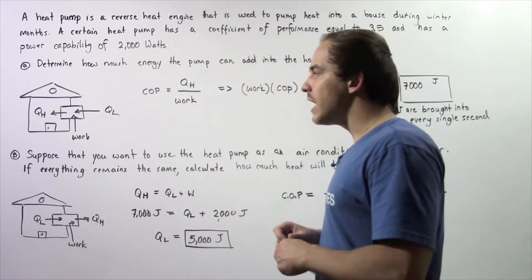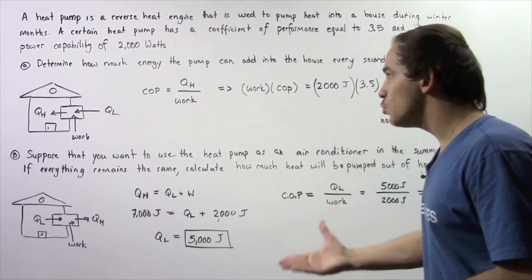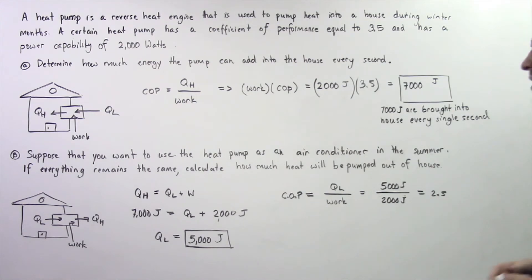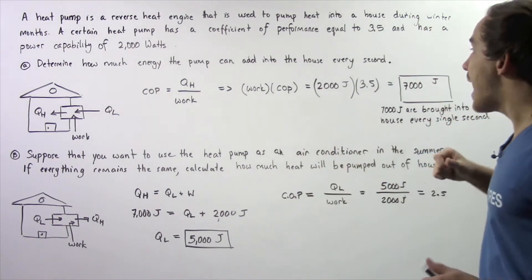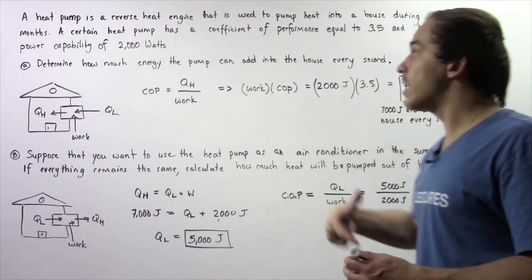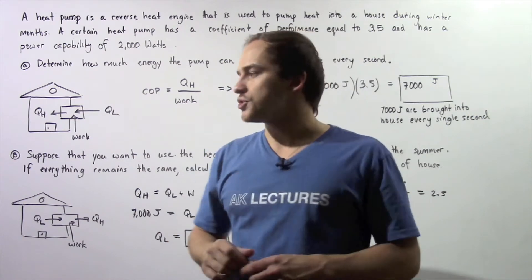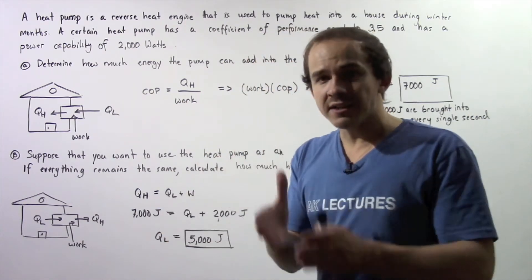Now let's move on to part B. Suppose now you want to use this same heat pump as an air conditioner in the summer. If everything stays the same, calculate how much heat will be pumped out of the house. Our COP remains at 3.5 and our power capability remains at 2,000 joules per second.